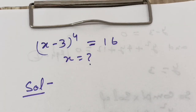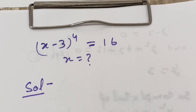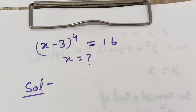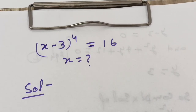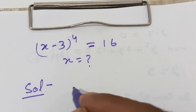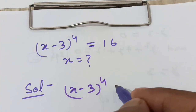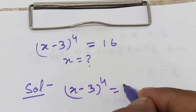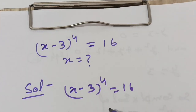Welcome to the channel. The question is: (x minus 3) to the power 4 equals 16. Find x.